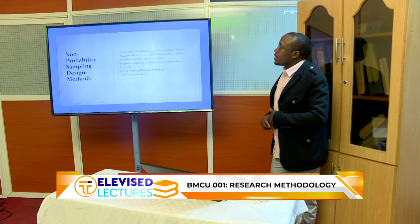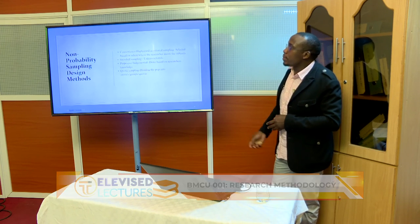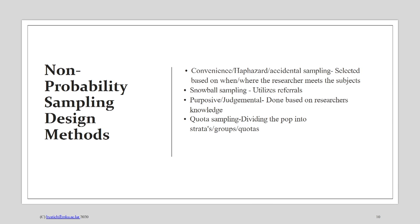Now let's look at the non-probability sampling methods. Non-probability sampling is subjective and biased, and is used especially when you do not want to infer your findings to the population — such as in a case study. The different types of non-probability sampling methods are: convenience sampling (also called haphazard or accidental sampling), snowball sampling, purposive or judgmental sampling, and quota sampling.